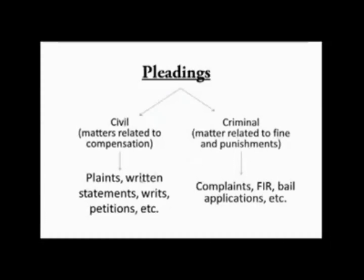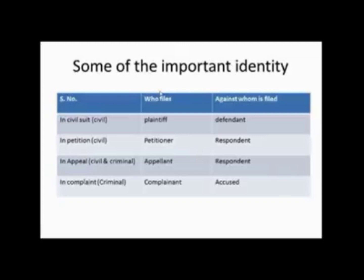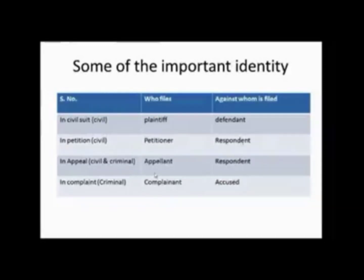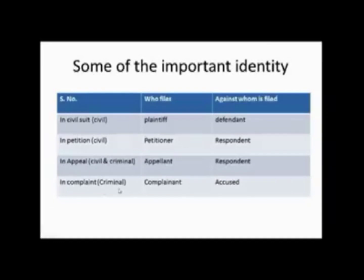In this video we will study how to write a plaint and written statement. First, we need to identify the names of parties. In a civil suit, the person who files a suit is the plaintiff and the person against whom it is filed is the defendant. When a petition is filed, the filer is the petitioner and the other party is the respondent. In an appeal, the filer is the appellant and the other party is the respondent. In criminal matters, the person who files a complaint is the complainant and the person against whom it is filed is the accused.